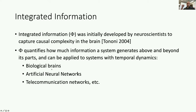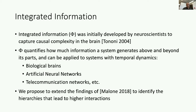This measure can be applied to biological brains, artificial neural networks, and telecommunication networks — as was shown by Malone in a previous paper using the case of peer-to-peer networks. We propose to extend his work by not only measuring this entity in groups, but also trying to identify microscopic and macroscopic interactions of the overall hierarchy, and how these different agents can interact in order to provide better quality content.